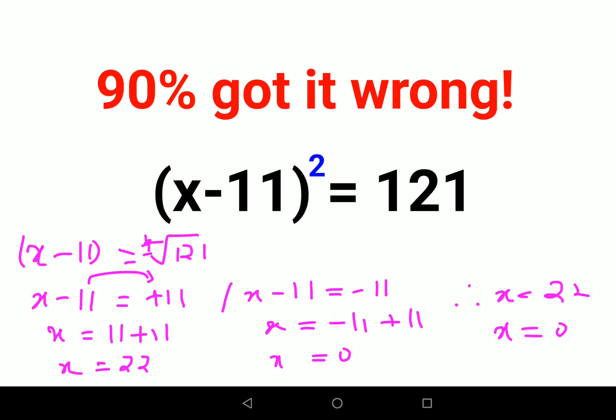Now let's check. If I put the value of x as 22, I have 22 minus 11, that gets me 11 whose square will get me my answer. Now instead of x, let's put the value of x as 0.